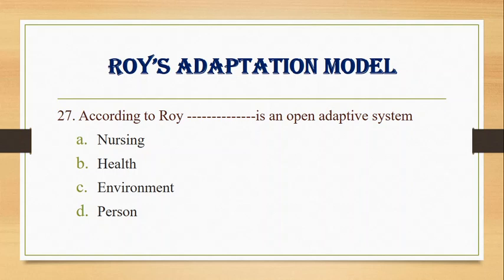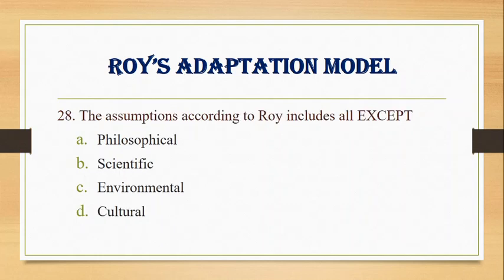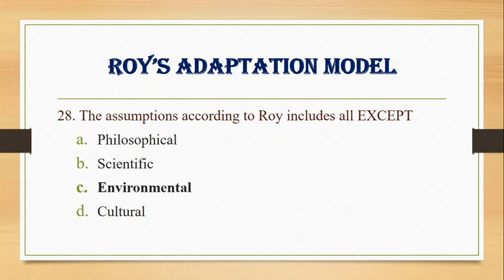Number 27. According to Roy, a person is an open adaptive system. Number 28. The assumptions according to Roy include all EXCEPT: A. Philosophical, B. Scientific, C. Environmental, D. Cultural. Answer: C. Environmental. According to Roy, there are three types of assumptions: philosophical, scientific, and cultural.